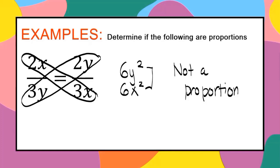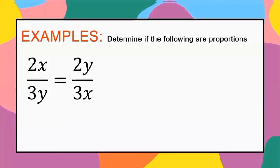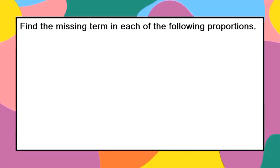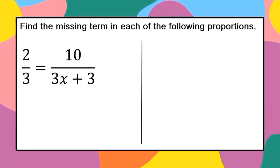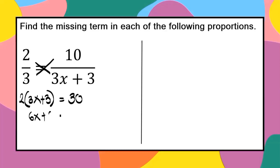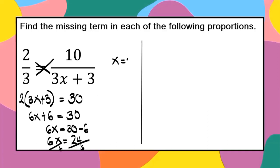To determine a proportion, just get the product of the means and extremes, or simply cross multiply. Now let us find the missing term. In the first example, cross multiply: 2 times (3x + 3) equals 10 times 3, which gives 6x + 6 = 30. Then 6x = 24. Dividing both sides by 6, x equals 4.